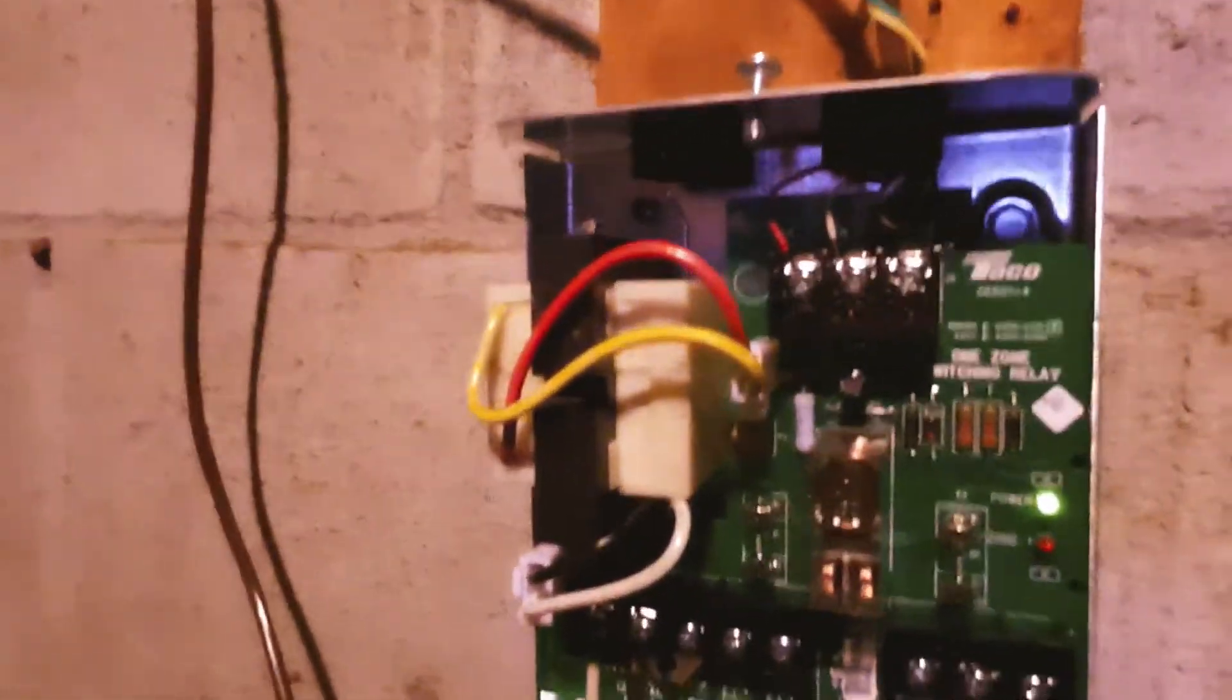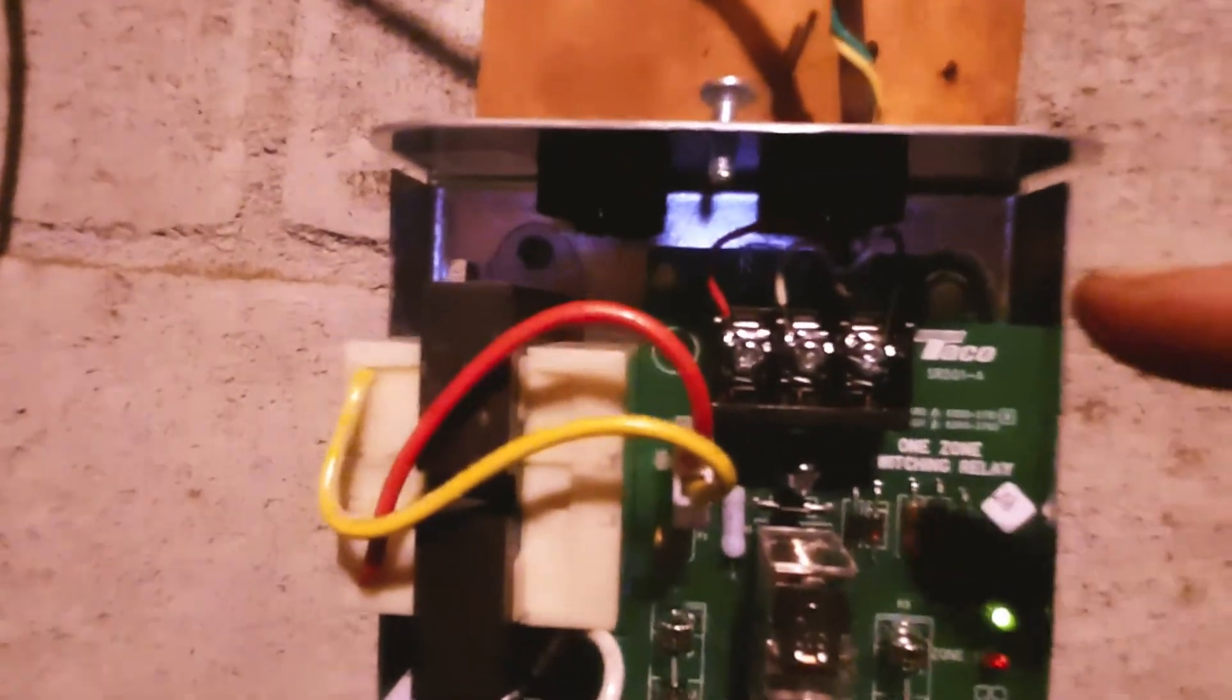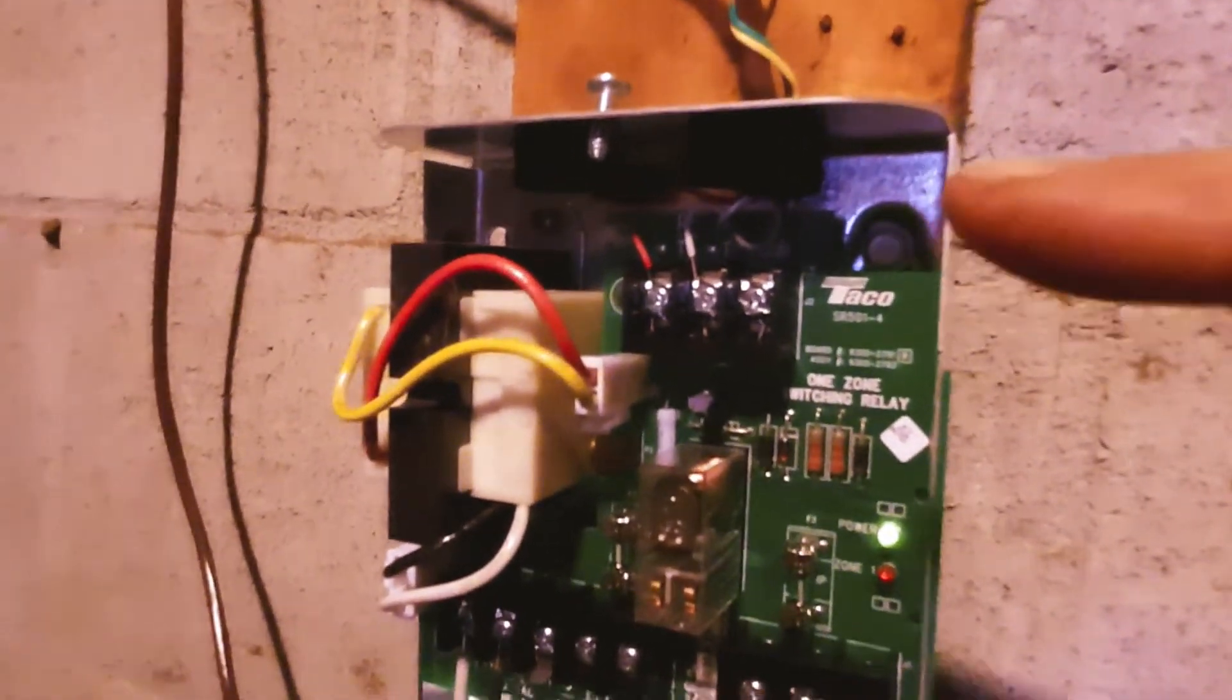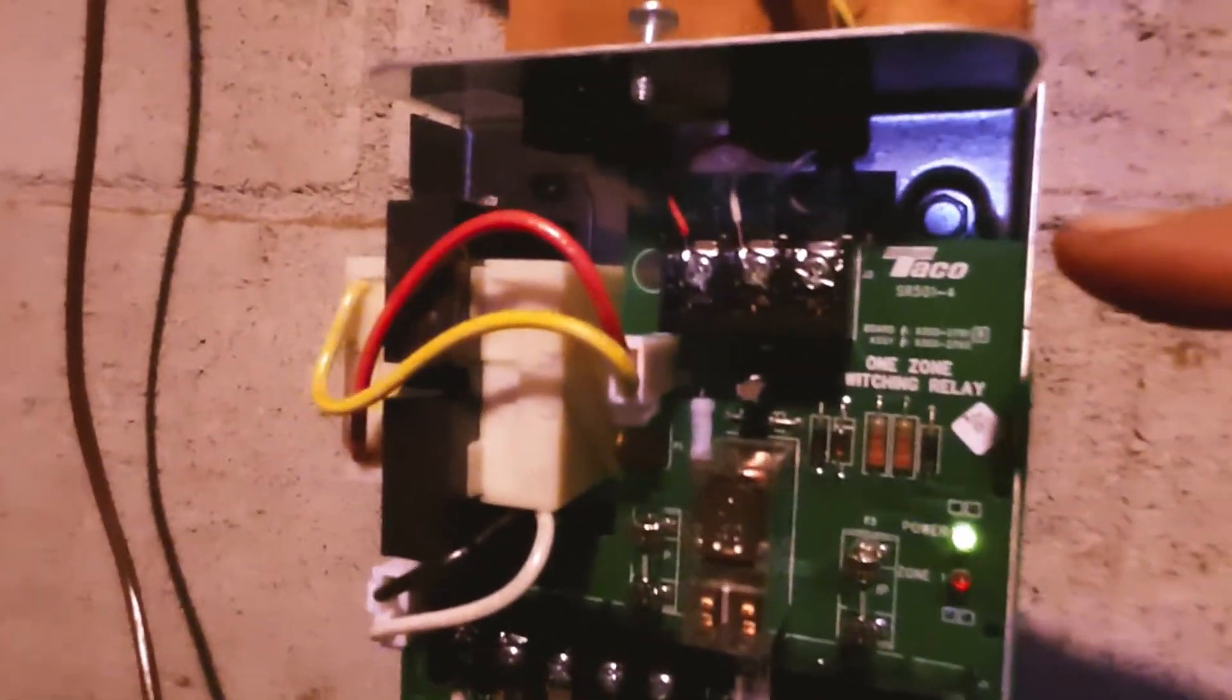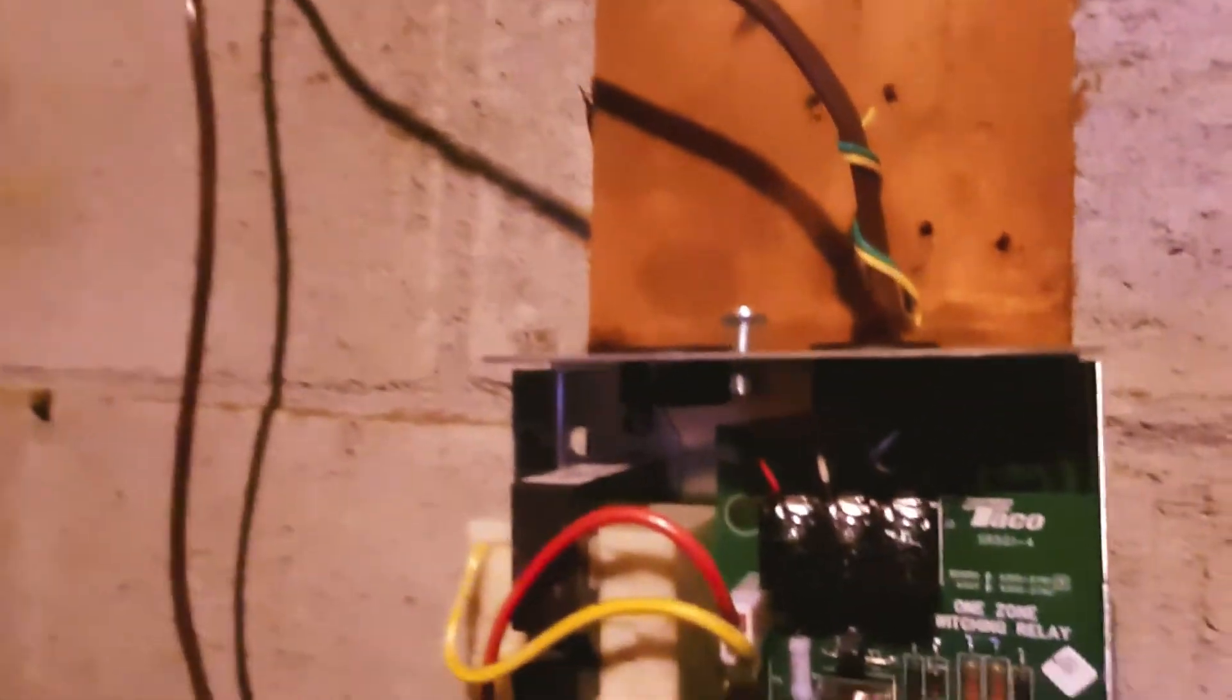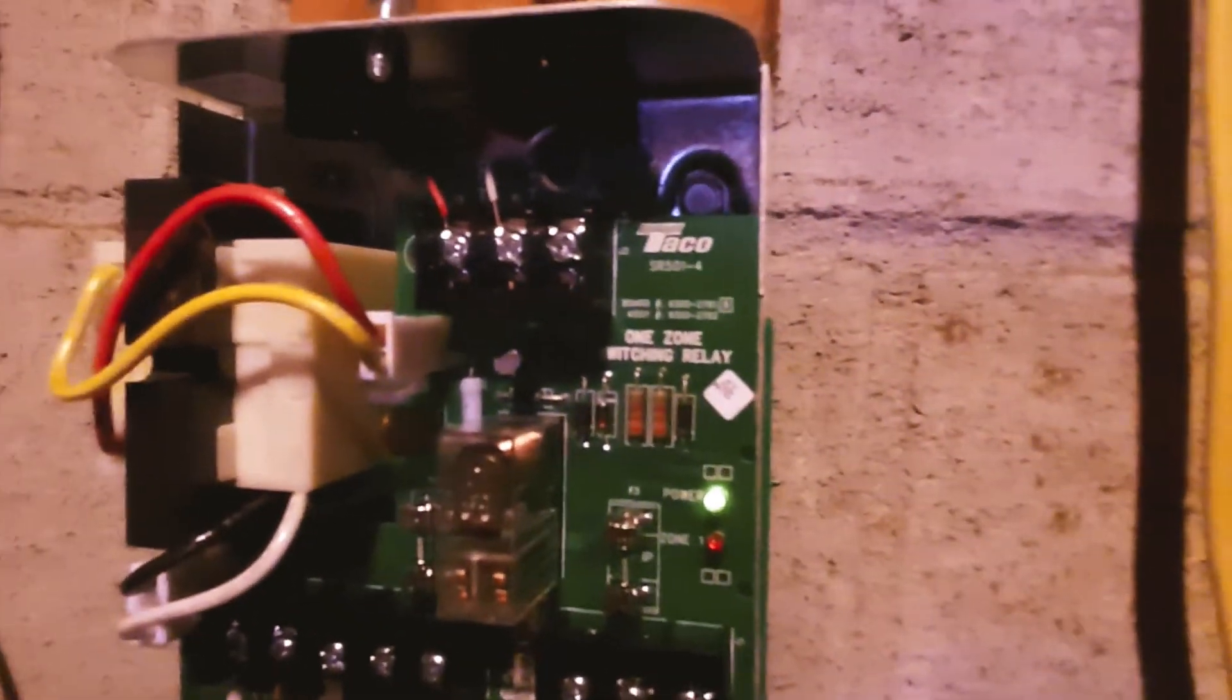So after that, once you get that wired in, then on the top of the switching relay, this is the thermostat wire that's actually going to the thermostat. So you've got, you can't see it too well, but you've got red, white, and COM wire. And that goes, and I re-threaded that through the wall to the thermostat.